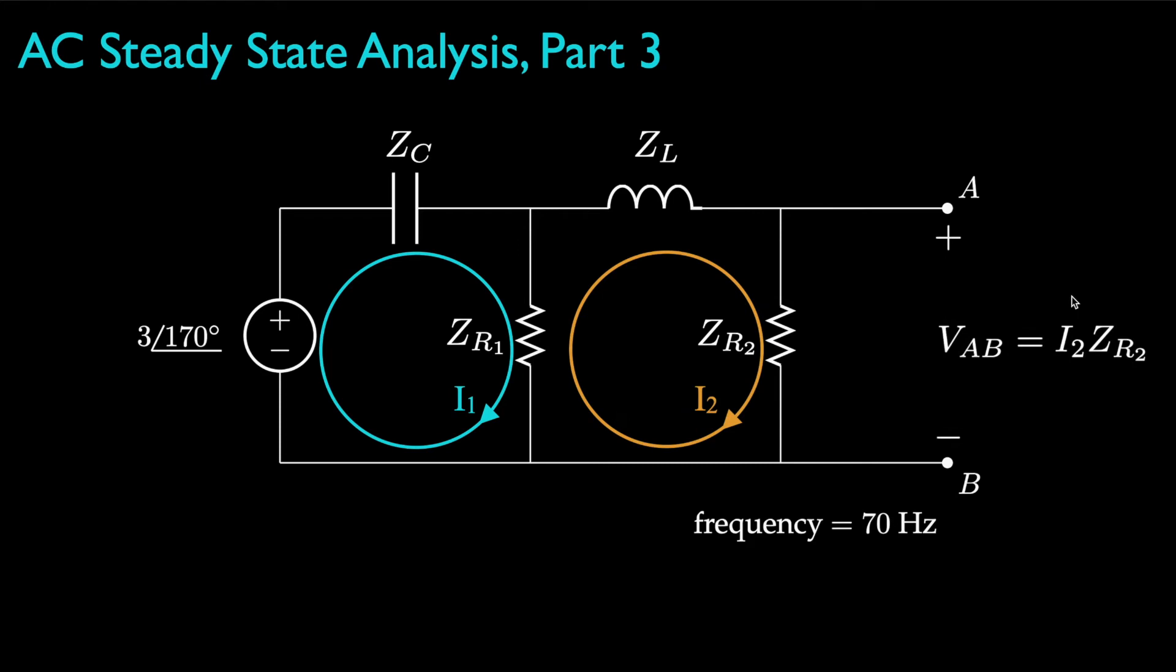The desired voltage drop from A to B will be the impedance for the second resistor times the mesh current I2. And once we've set the problem up this way, we could use a calculator or some software tool to solve this circuit.